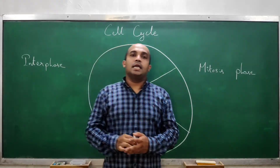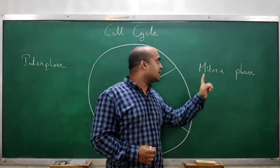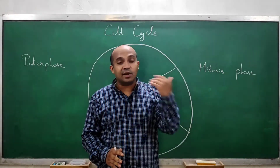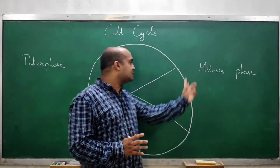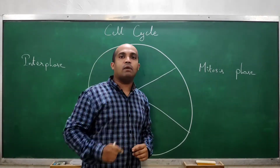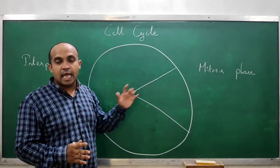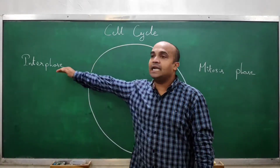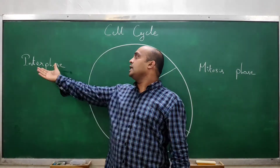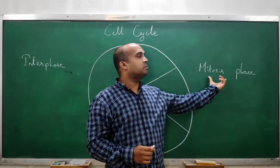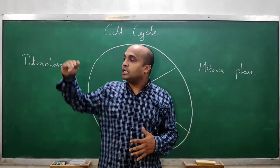In human cells, almost just one hour is taken by the mitosis phase out of a 24-hour cell cycle. So M phase takes just one hour, which is about five percent of the total cell cycle duration. The remaining 95 percent of the time is consumed by interphase in human cells which are undergoing cell division. So almost 95 percent of time is taken by interphase and just five percent by the mitosis phase.